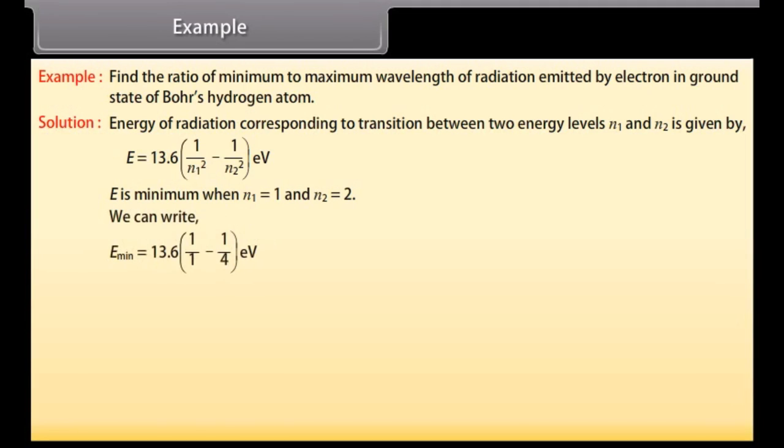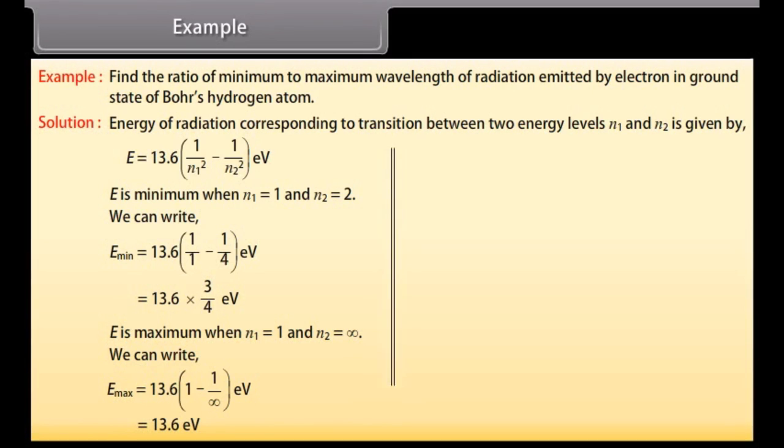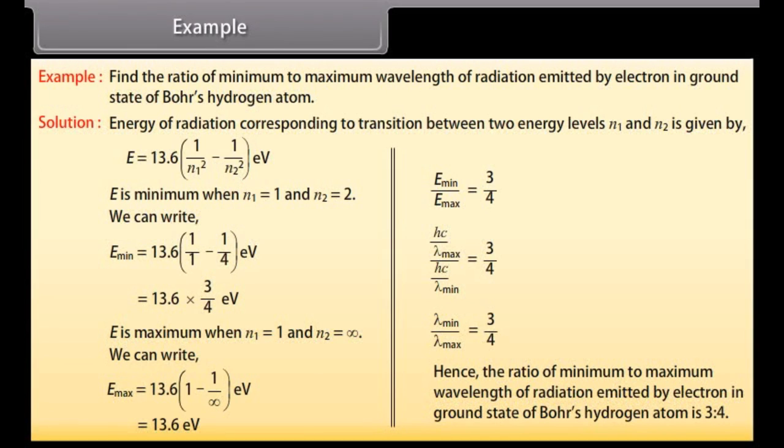E is maximum when N1 is equal to one and N2 is infinity. E maximum is 13.6 electrovolt. Now taking ratio of E minimum and E maximum we get E minimum upon E maximum as 3 upon 4 or lambda minimum upon lambda max equals 3 upon 4. Hence the ratio of minimum to maximum wavelength of radiation emitted by electron in ground state of Bohr's hydrogen atom is 3 ratio 4.